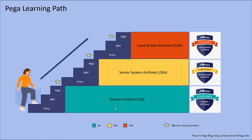As a fresher, whenever someone starts with PEGA technology they will begin their career as a system architect. After gaining considerable experience they become a senior system architect — like a senior developer where all hands-on design, solutioning, and skills needed for a PEGA developer are attained. Some SSAs will develop proficiency to mentor other system architects, eventually becoming tech leads and finally lead system architects.